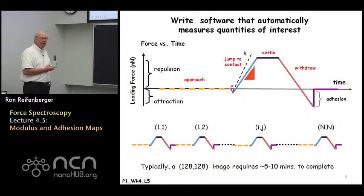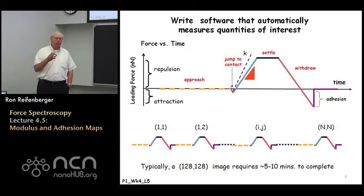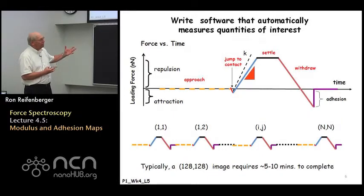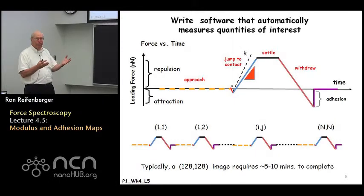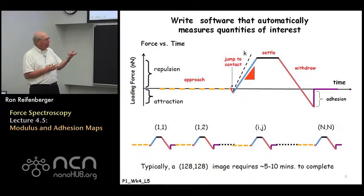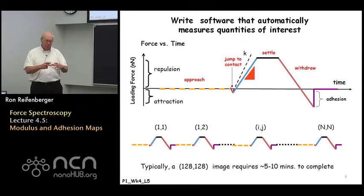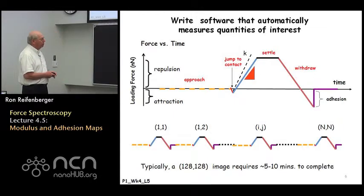Typically when you do an adhesion map or a modulus map, you do not perform it at the same resolution as the topographic map, simply because of the time required. Typically an adhesion or modulus map contains something on the order of 128 by 128 pixels, and acquiring an image at that resolution typically requires five to ten minutes. This means during the experiment you need a very stable situation — you can't have a lot of thermal drift, so you need to warm your system up and let everything stabilize to get reliable data.